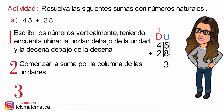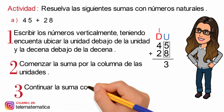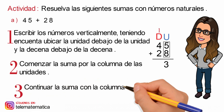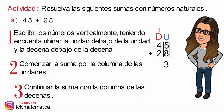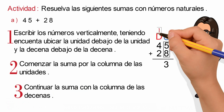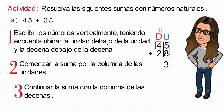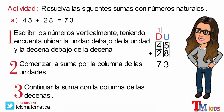Paso número 3: continuar la suma con la columna de las decenas. Luego sumamos 1 más 4 es igual a 5; 5 más 2 es igual a 7. Y este resultado lo escribimos en la operación de 45 más 28.